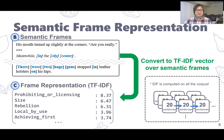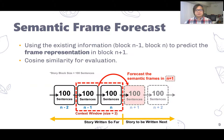After getting all the semantic frames, we turn them into a TF-IDF vector, so the value here means the importance of each frame. Let's go back to this figure again. What are we going to do in the semantic frame forecast task? We will use the existing information, which basically means story block n, to predict the frame representation in the next story block, which is story block n+1.